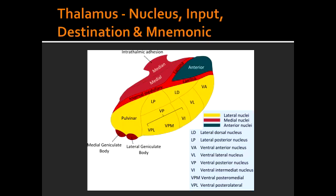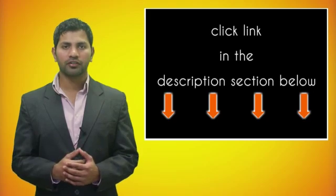The input information for the Ventral Lateral Nucleus (VL) comes from the basal ganglia. Motor information comes into the ventral lateral nucleus, and its end destination is the motor cortex.